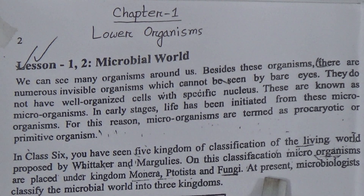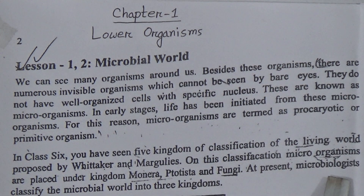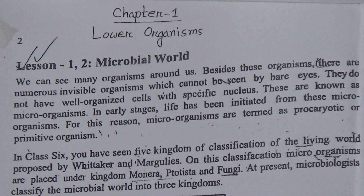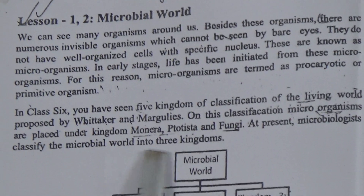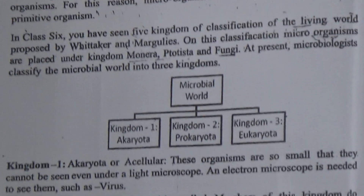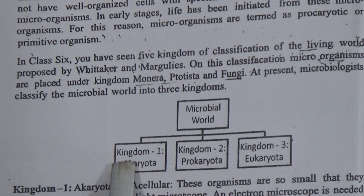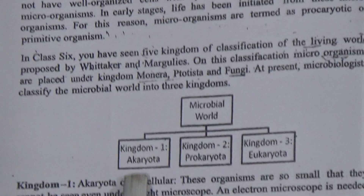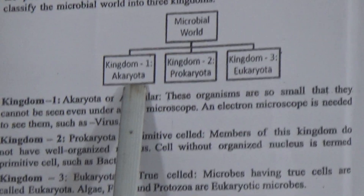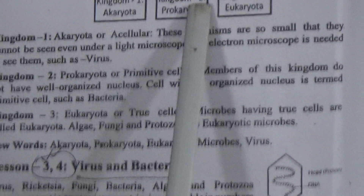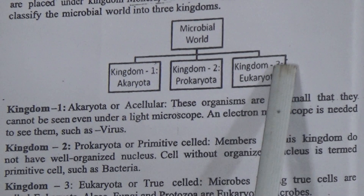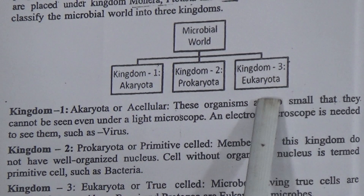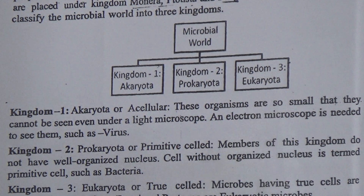At present, microbiologists classify the microbial world into 3 kingdoms: Kingdom 1 - Acaryotum, Kingdom 2 - Prokaryotum, and Kingdom 3 - Eukaryotum.